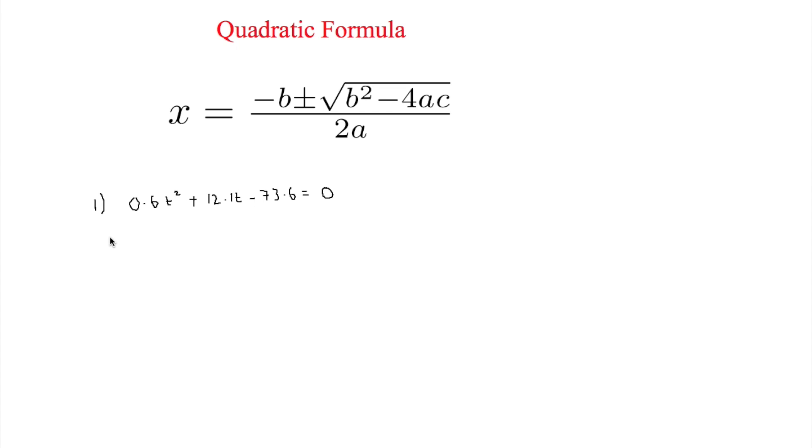Here we have a harder example, which you're more likely to see at A-level: 0.6t squared plus 12.1t minus 73.6 equals 0. You can tell this will be harder. The way we work this out is exactly the same, however. The coefficient a is 0.6, b is 12.1, and c is negative 73.6.